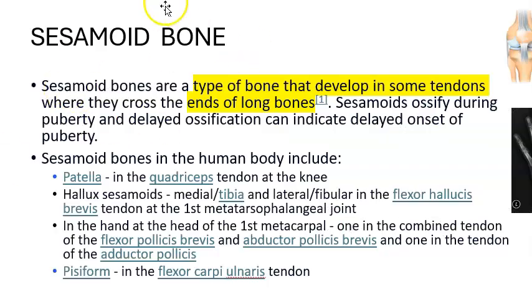So the two bones covered so far: patella in the quadriceps tendon at the knee joint, and the pisiform in the flexor carpi ulnaris tendon at the wrist joint.